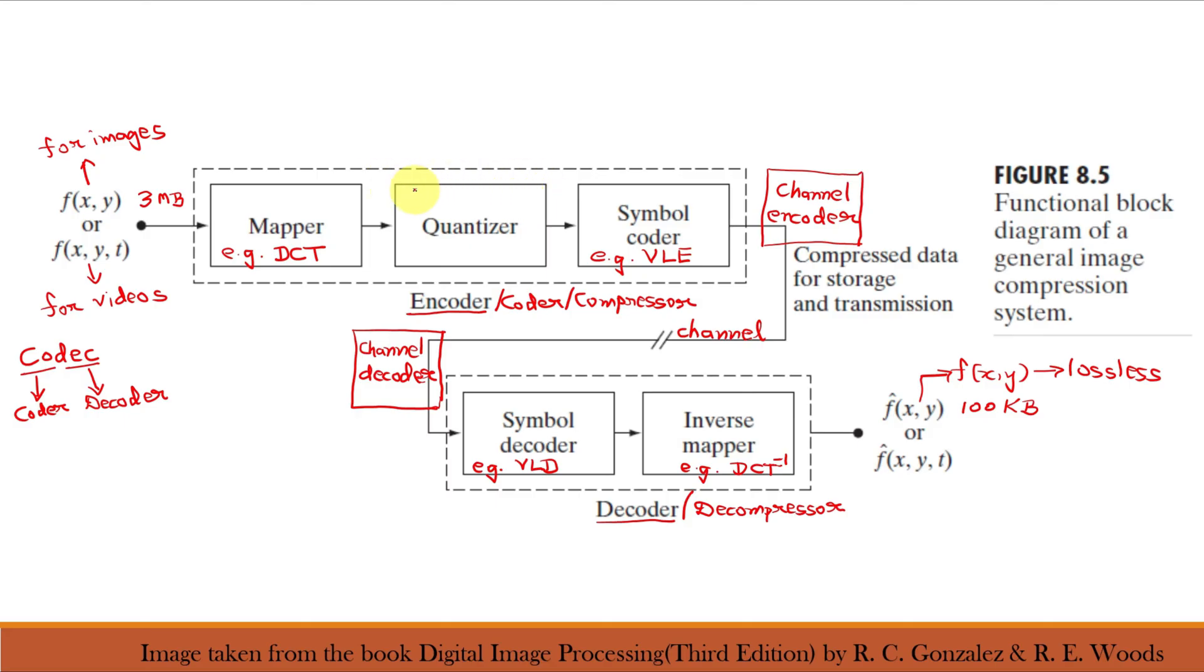Now, this figure shows the encoding process as three successive operations. But all the three operations are not necessarily included in every compression system. For example, the quantizer must be omitted when error-free compression is desired. In addition, some compression techniques normally are modeled by merging blocks that are physically separate. In predictive compression systems, for instance, the mapper and quantizer are often represented by a single block which simultaneously performs both operations.